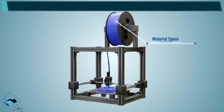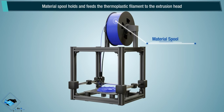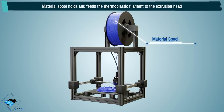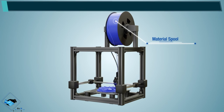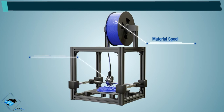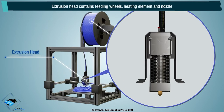Material Spool: The material spool holds and feeds the thermoplastic filament to the extrusion head. The extrusion head contains feeding wheels, a heating element, and a nozzle.